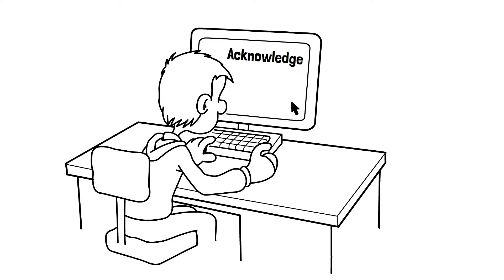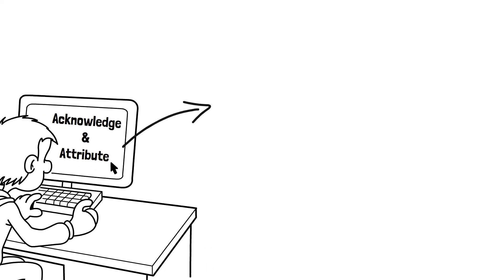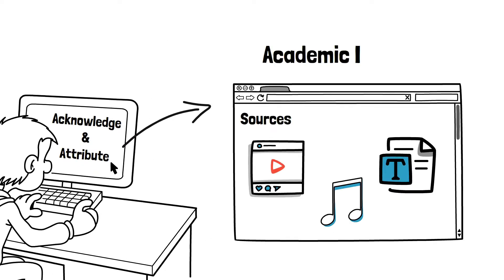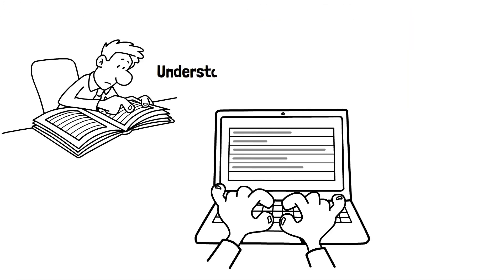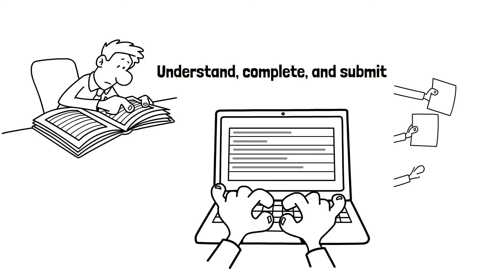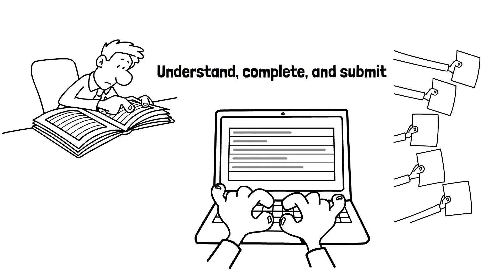When students acknowledge and attribute information to the correct sources for an assignment, they demonstrate academic integrity. When students understand, complete, and submit their work on their own, they demonstrate academic integrity.